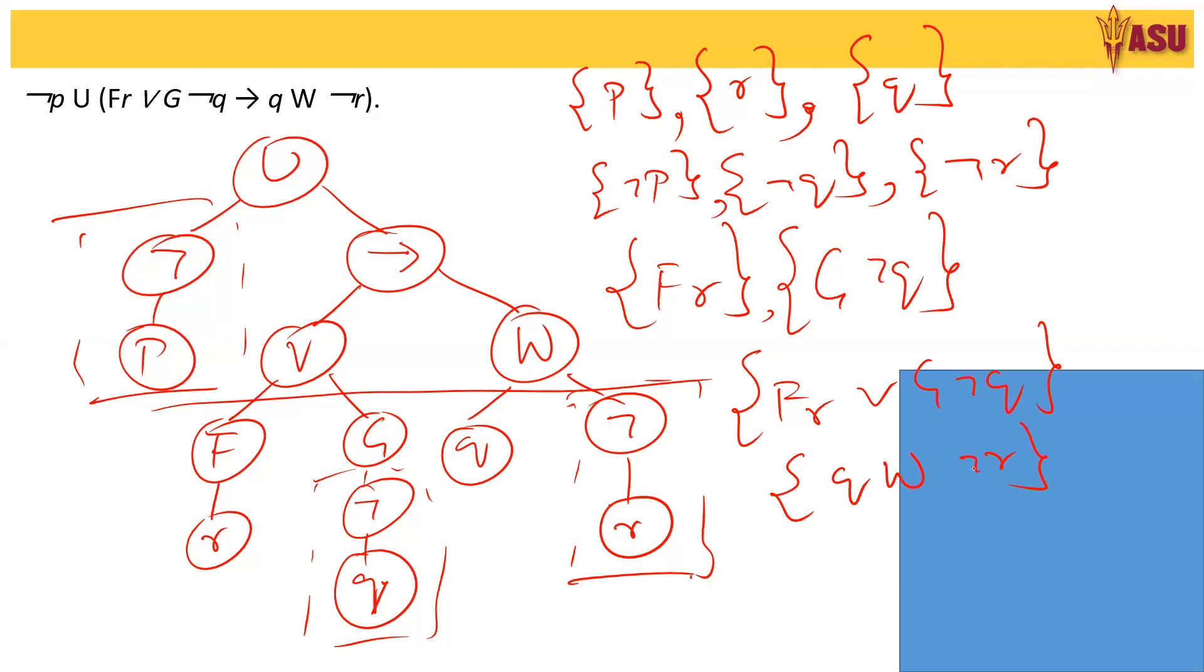Now the final part is where this implication is involved that becomes F R, that is future R, or globally no Q in the future, implies Q V NOT R. So these are the sub-formulas in our entire parse tree or in the given formula. This is how you write the parse tree and sub-formulas.